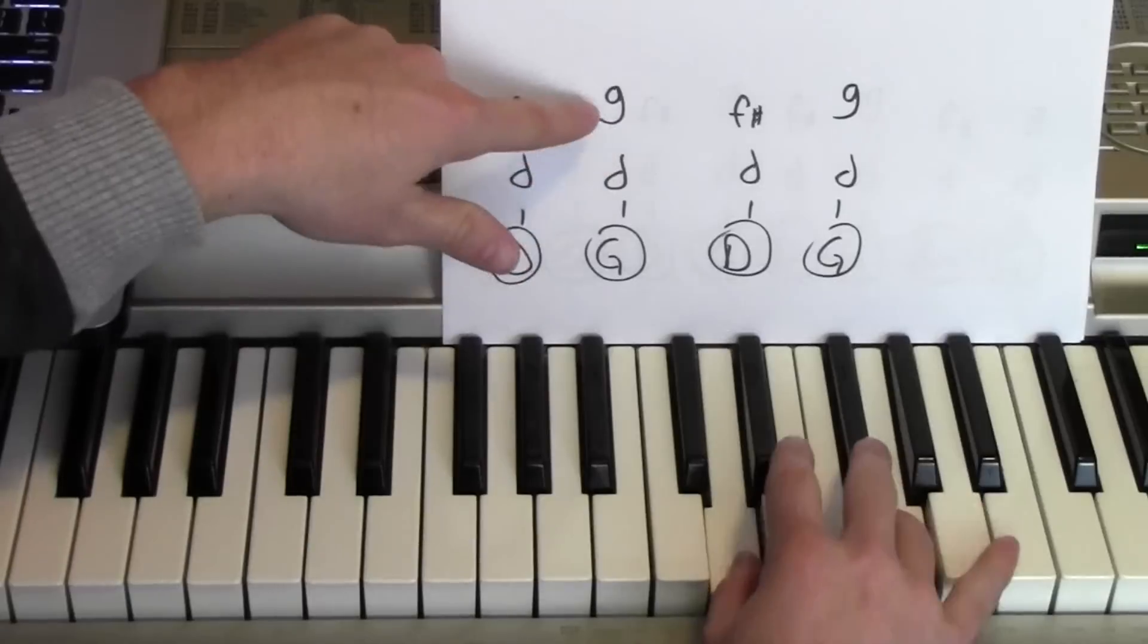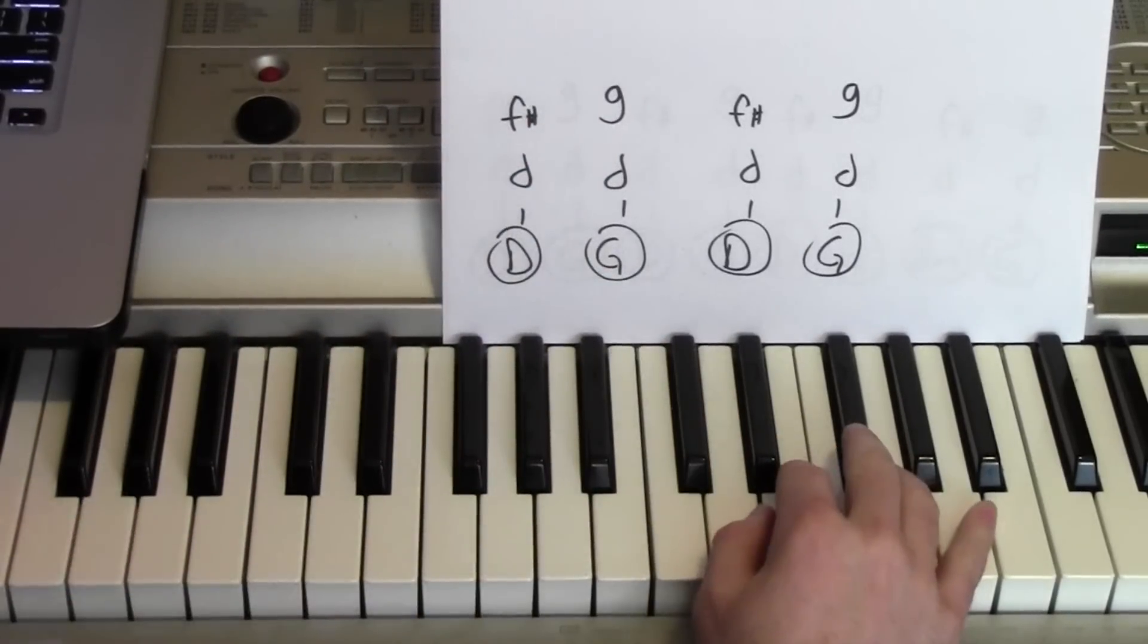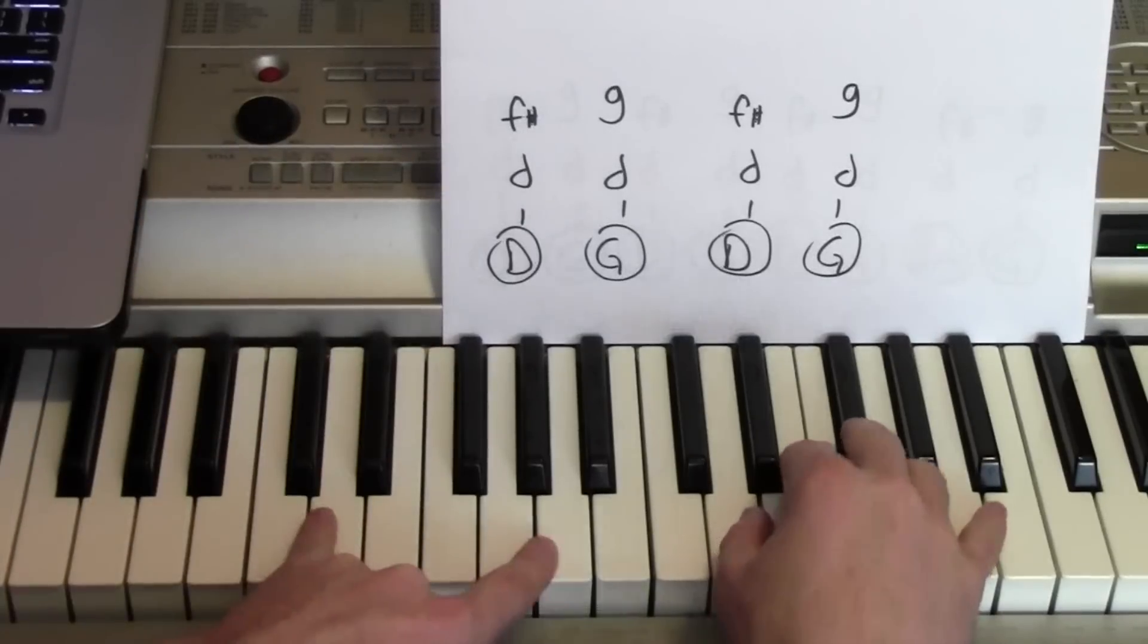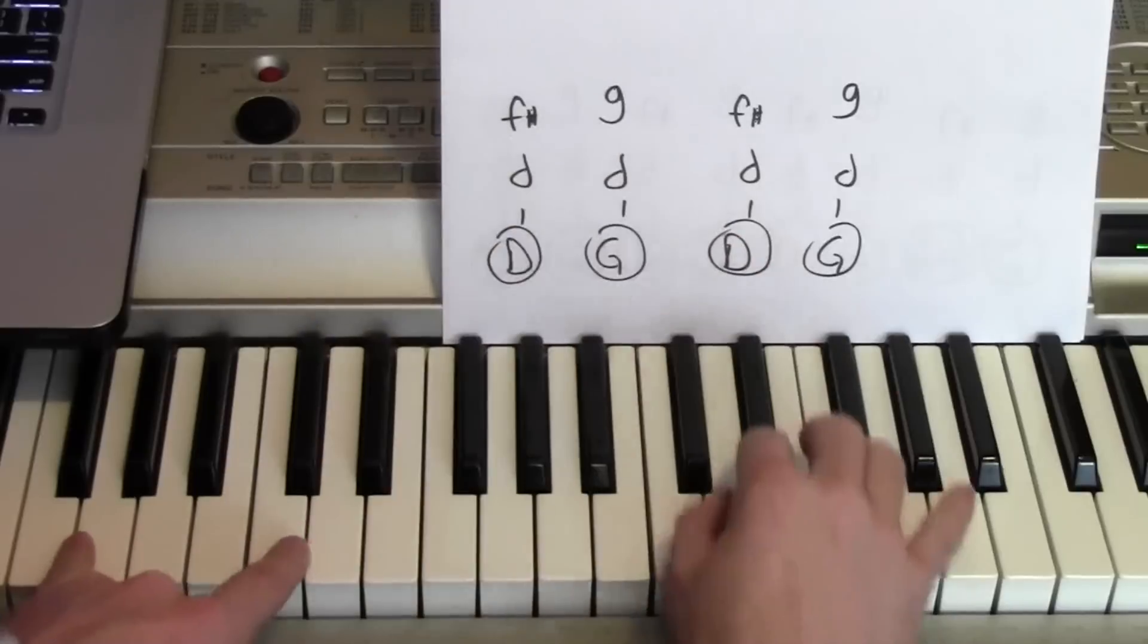D and F sharp, D and G. And the left hand is going from the D to a G. All right. Start from the D. And just take me over. Just take me over to the G.